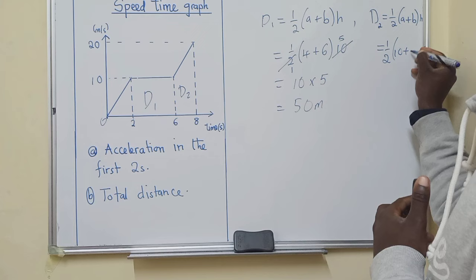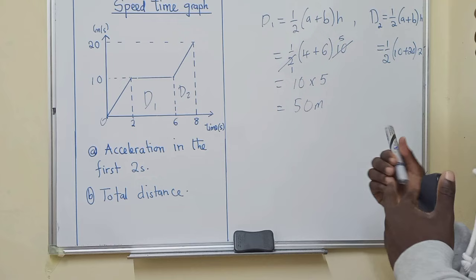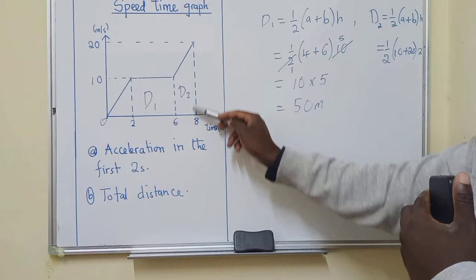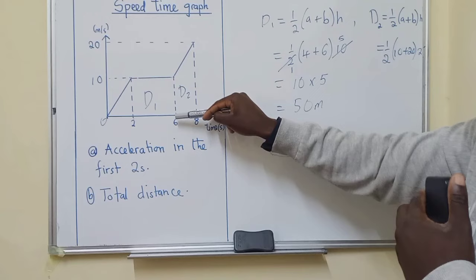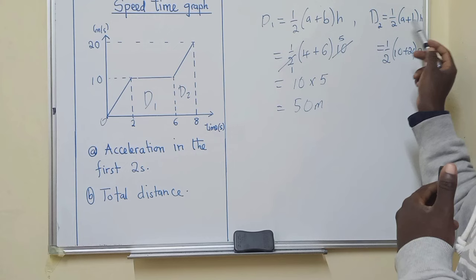Here what is our A? Our A will be 10 plus 20, our height will be 2. Also let me just go through how I have identified this A. You check the parallel lines, there's this and this. So the shorter one can be your A. So from here to here it's 10, and then from here to here it's 20. That's where the 20 has come from.